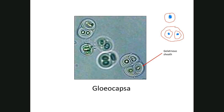So let me highlight that. Here you have one cell, another cell, and here you have a gelatinous sheath for one, here's another one, and then you have the original one for those two, and you have a gelatinous sheath that puts all these together.